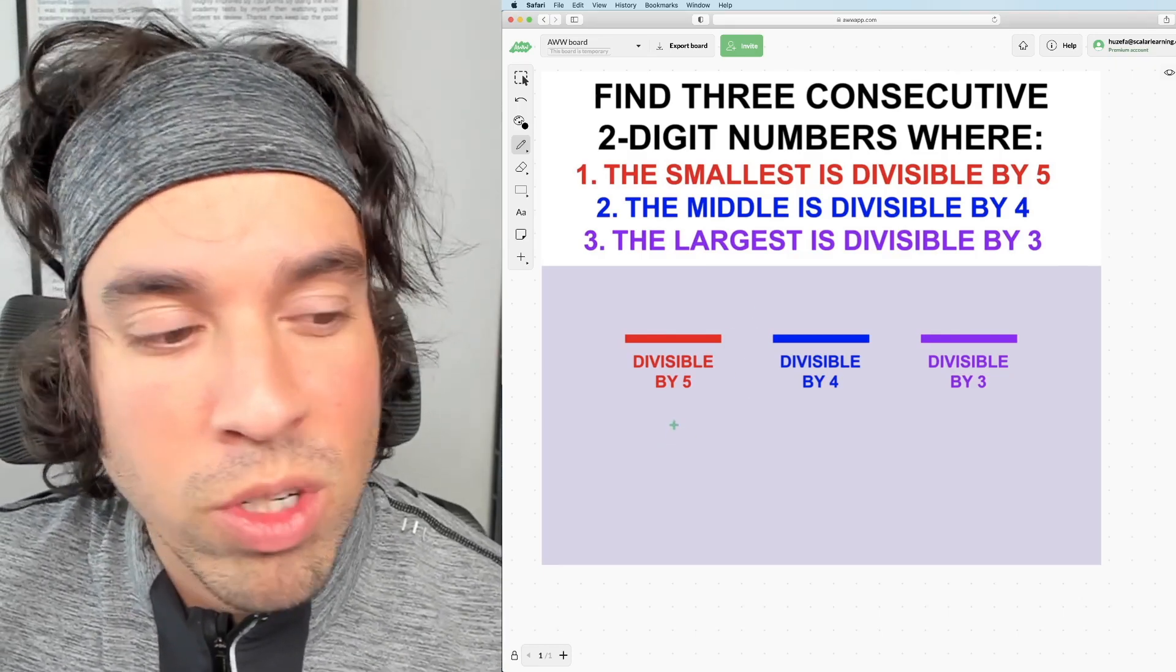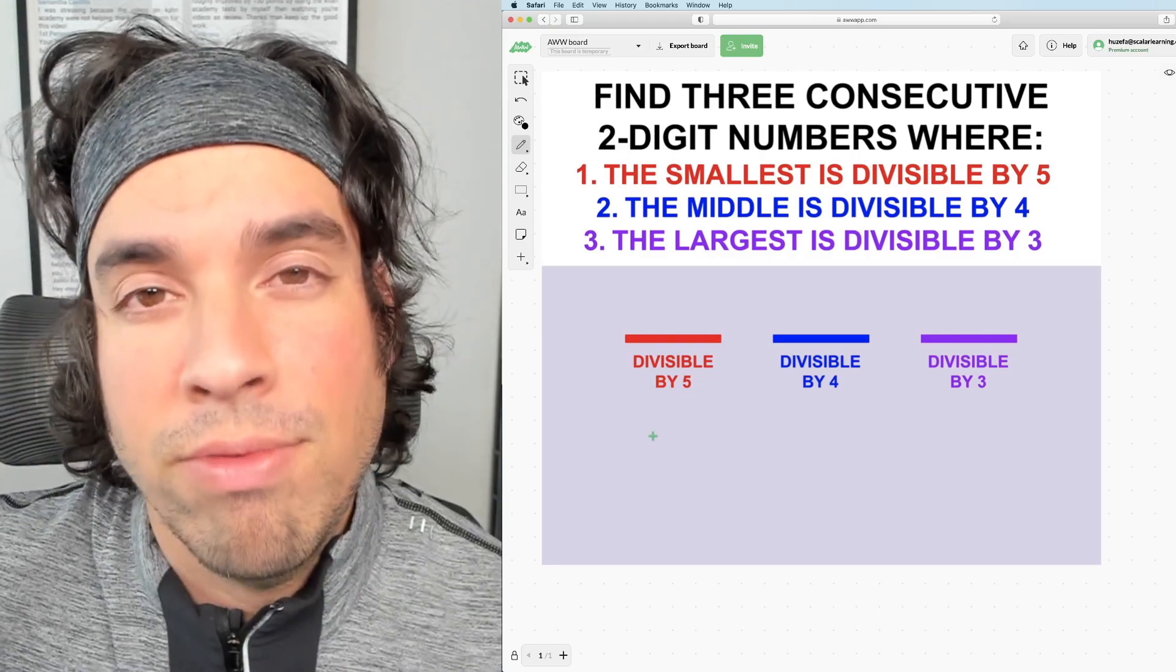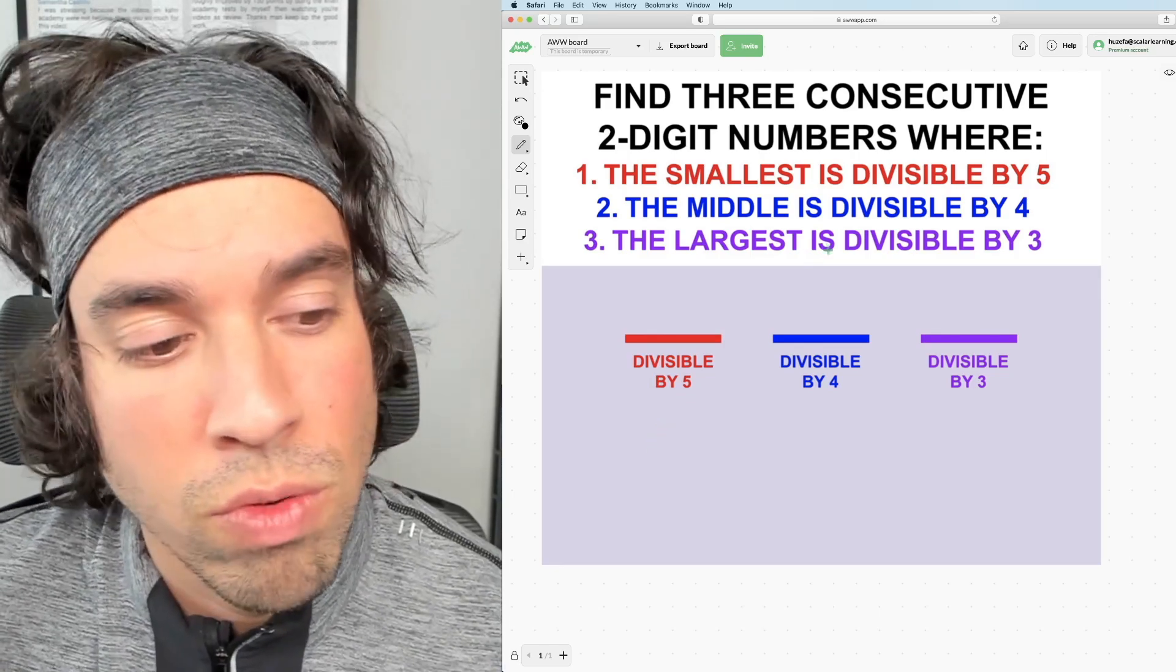So what are the two-digit numbers that are divisible by five? Well we'd have 10, 15, 20, 25, 30, 35, so on and so forth.